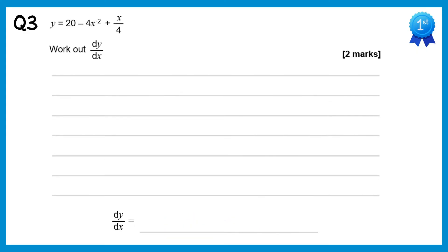For this function we start by differentiating 20 — that's a constant so it goes to 0. Moving on to the next term, we do the power negative 2 times the coefficient negative 4, which gives positive 8. Now we reduce the power down by 1 — it's negative 2, so that goes down to negative 3. Moving on to the next term, we can rewrite this as one quarter x. When you have any multiple of x and differentiate it, the x disappears, so this is just plus one quarter.